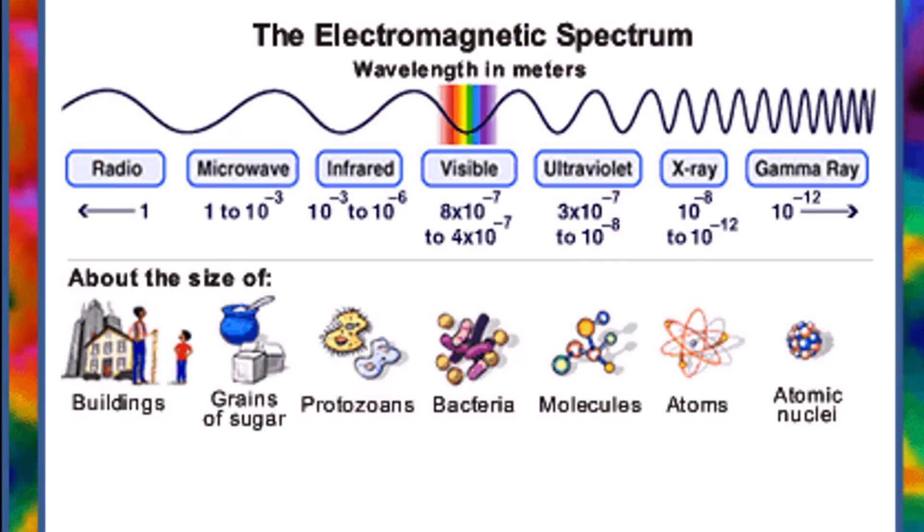Examples of electromagnetic waves include radio waves, microwaves, infrared, visible light, ultraviolet, X-rays, and gamma rays.